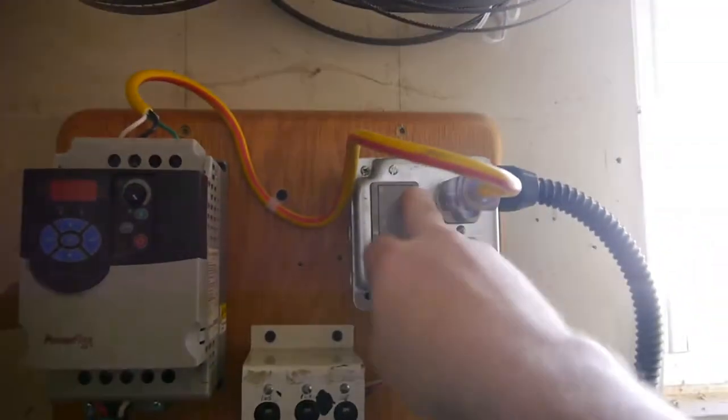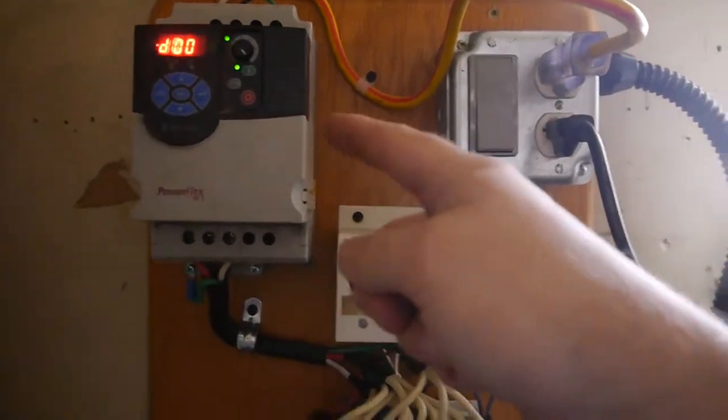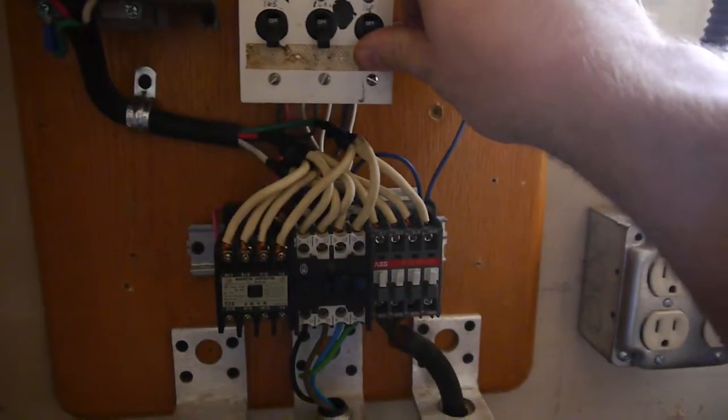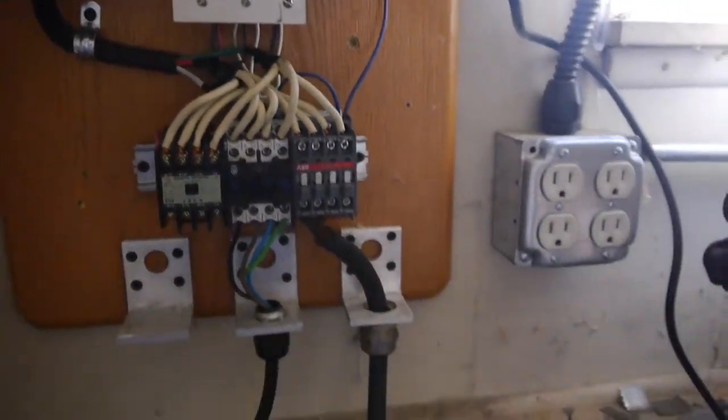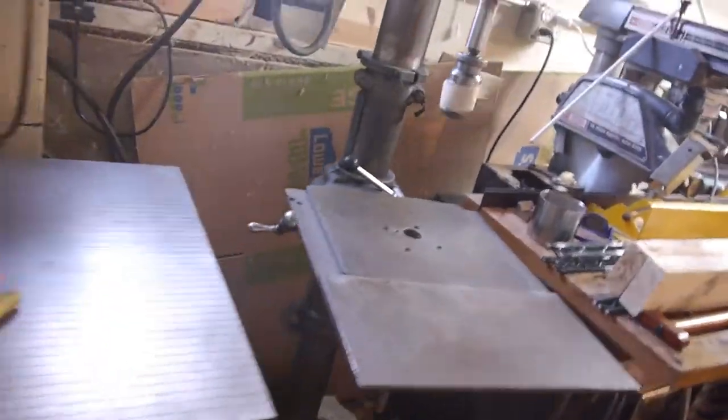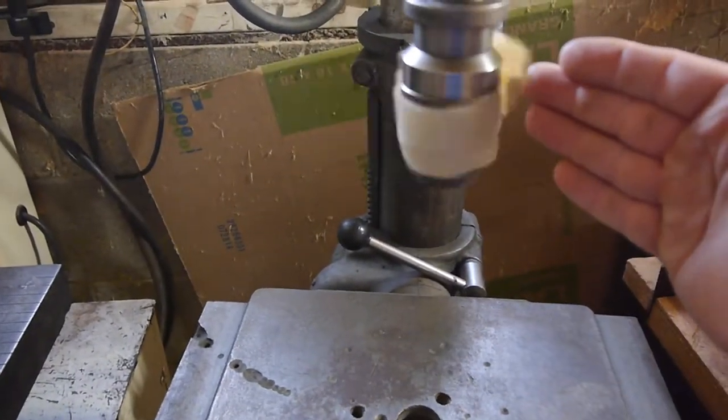So we'll start by turning the power on. That should light up. This is drill press, so we'll turn this on. All right, that means power is going to go to the drill press. Let's turn on the VFD. That is the wrong direction.